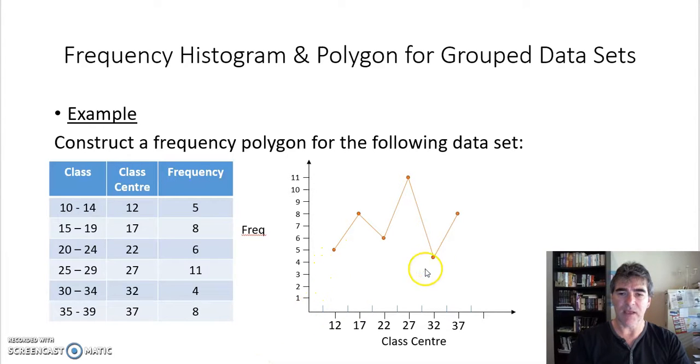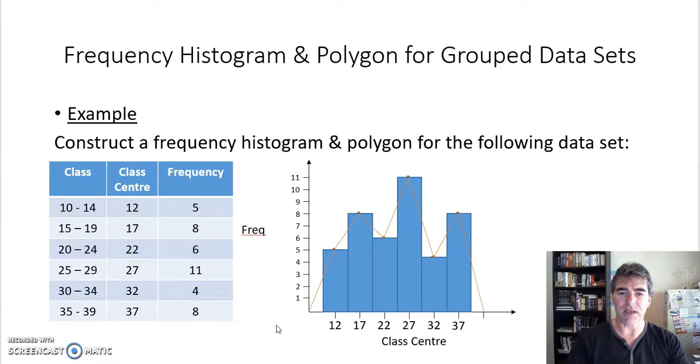But don't forget our first one has to come down to the beginning and our last one comes down as if we had that next score, because a polygon is going to be closed with the horizontal axis. So what we've got there is our frequency polygon, and sometimes the polygon and the histogram are done together, and that's what it looks like when they're both done together. So the histogram's the column graph and the polygon is the line graph. So I hope you found that useful and what you need to now do is do some practice to make sure that you get better at it, because the more you practice the easier it's going to become.